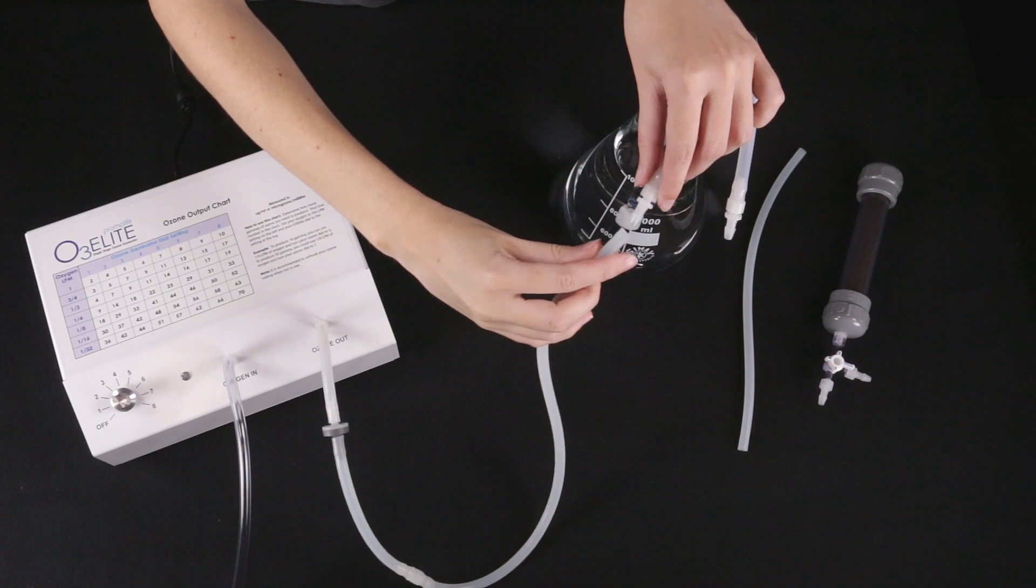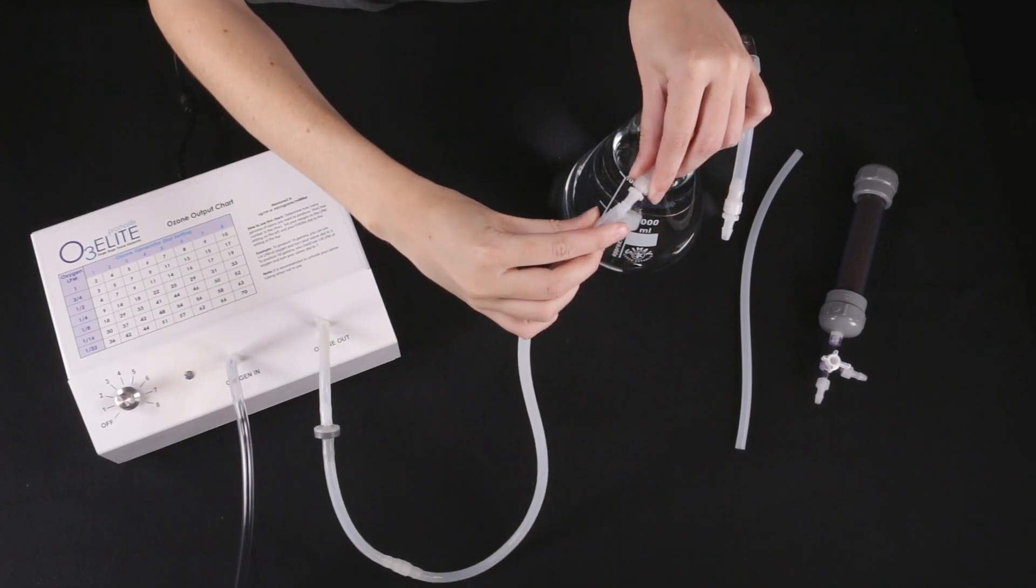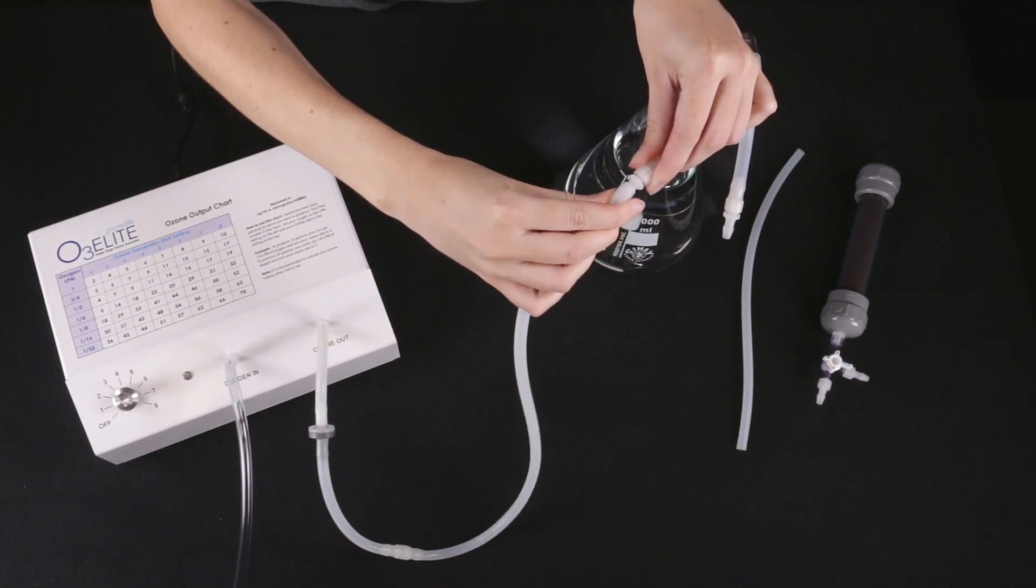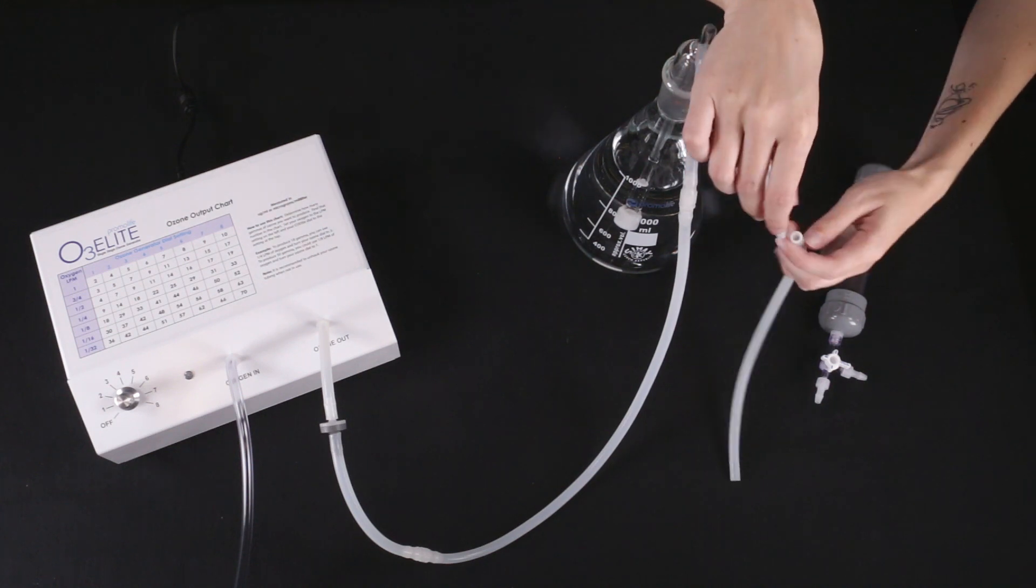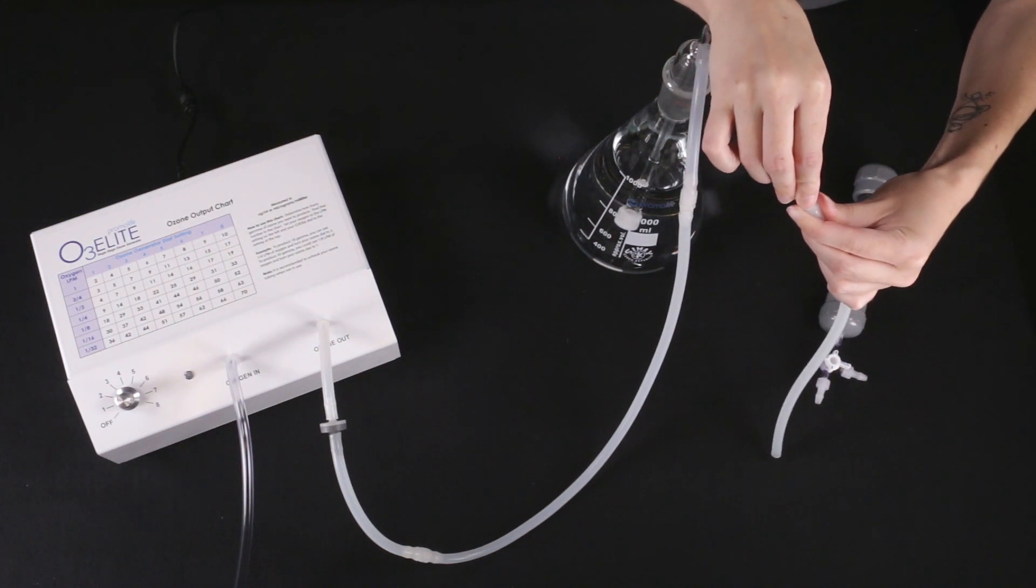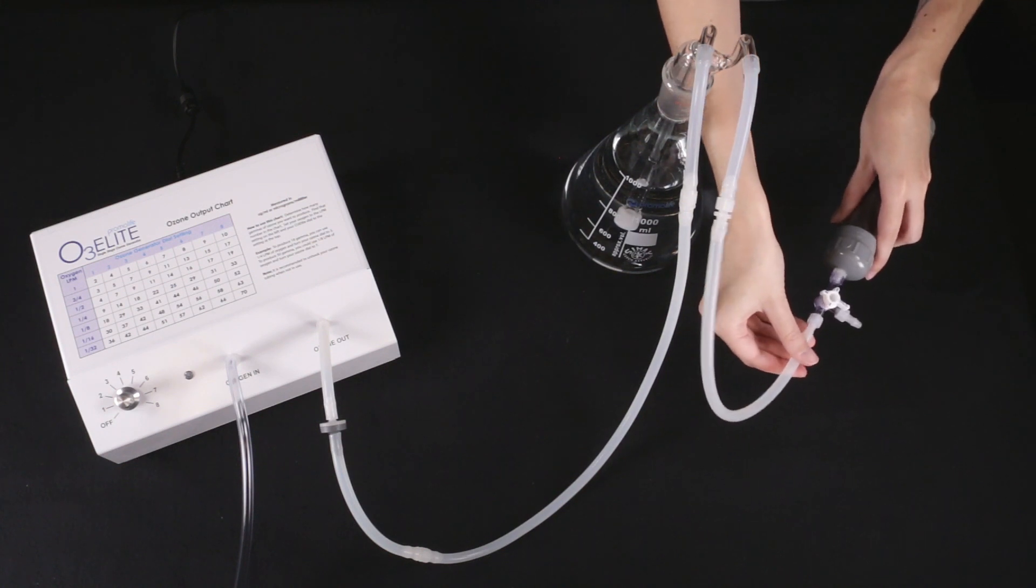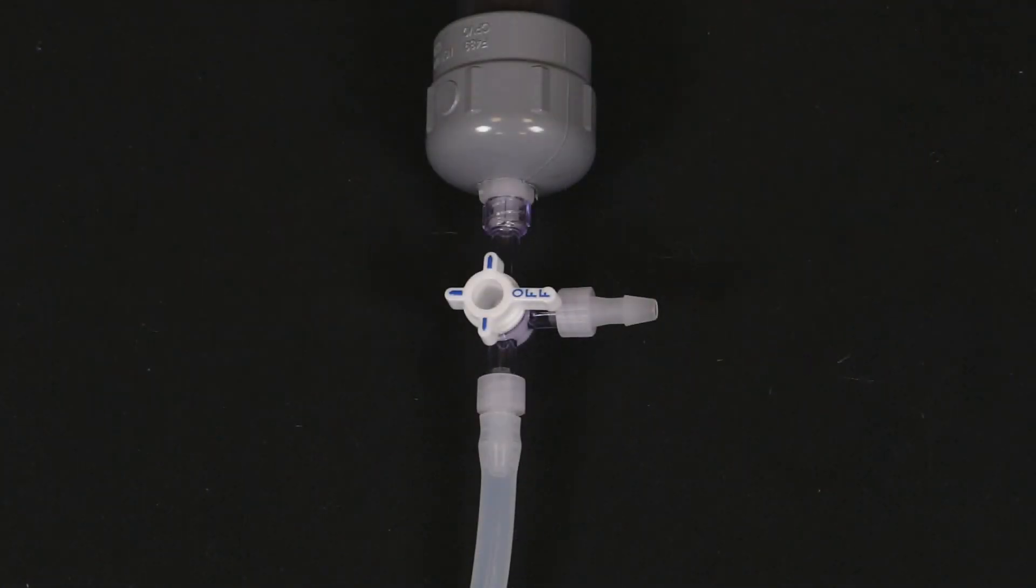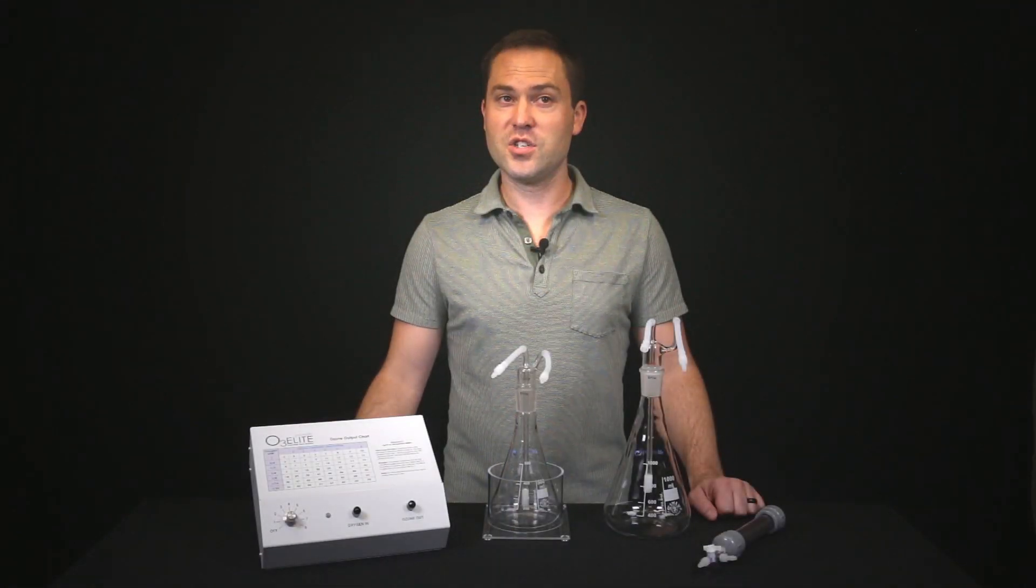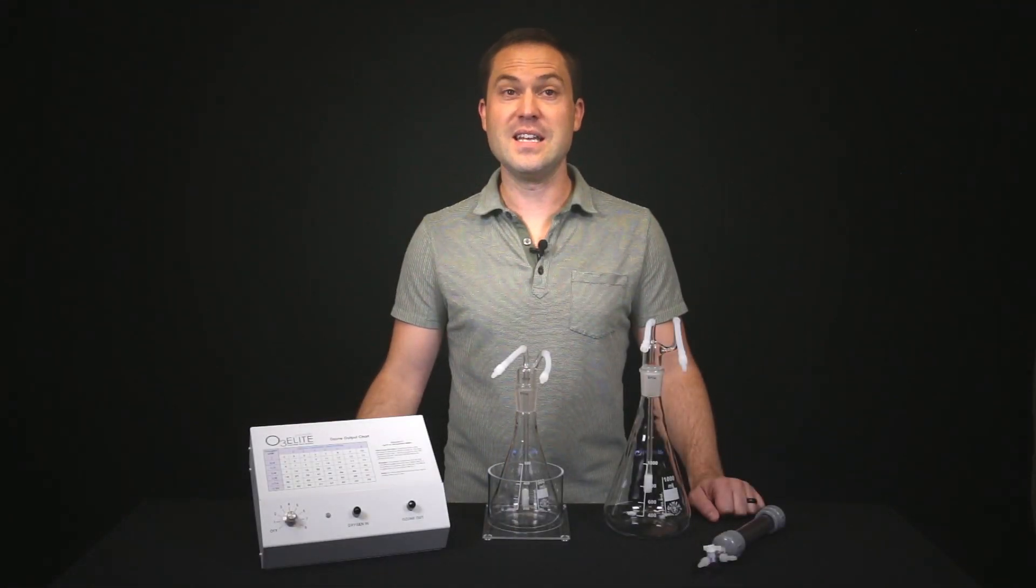You can now connect the other end of the 5 feet of silicone tubing to the ozone-in straw of the bubbler. Then, connect the 3 feet of silicone tubing to the ozone-out straw of the bubbler and the other end of the tubing to the bottom of the ozone destruct system. Make sure that the off valve on the destruct is positioned to the side. This will ensure the ozone is filtered until it is needed for use.